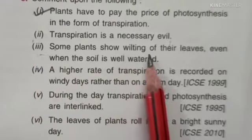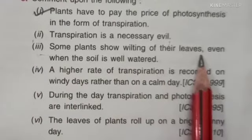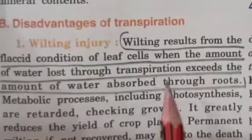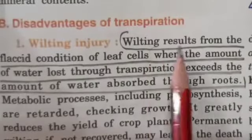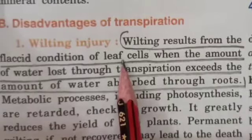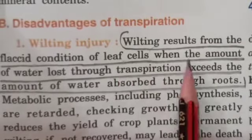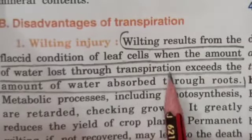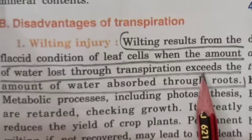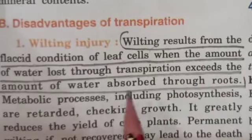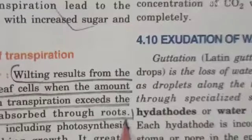Third comment: 'Some plants show wilting of their leaves even when the soil is well watered.' Wilting results from the flaccid condition of leaf cells, when the amount of water lost through transpiration exceeds the amount of water absorbed through the roots.